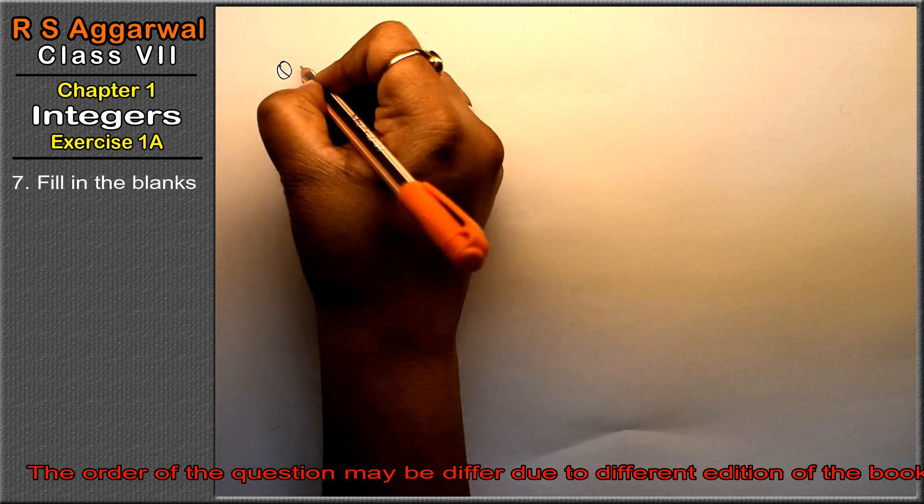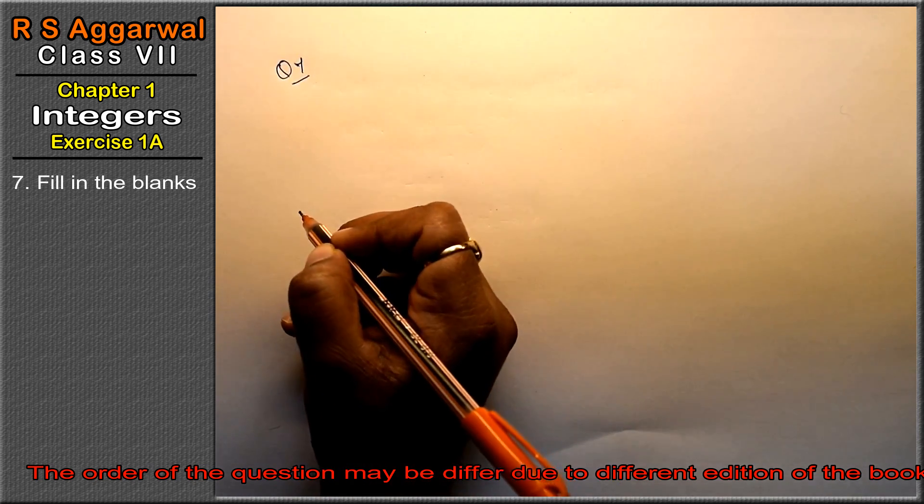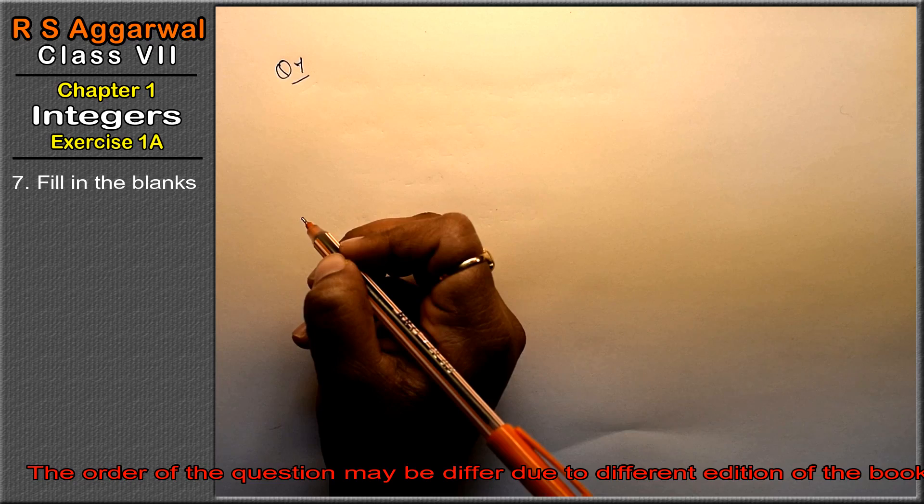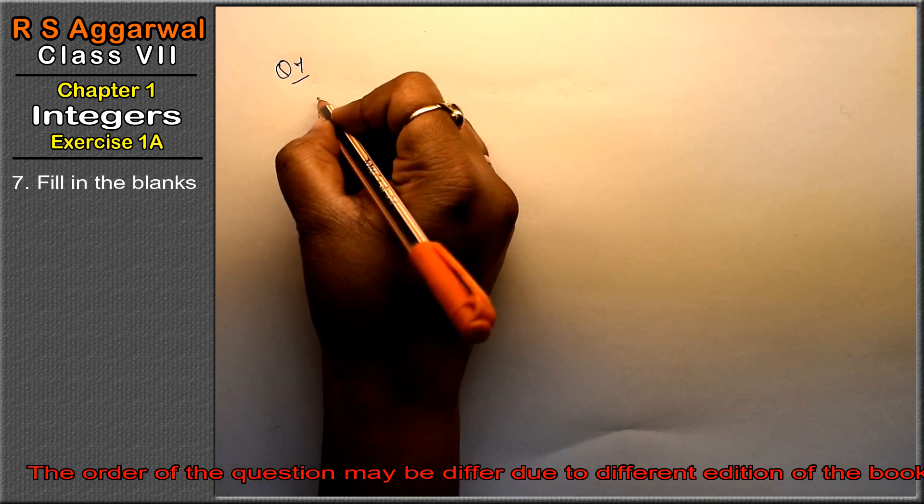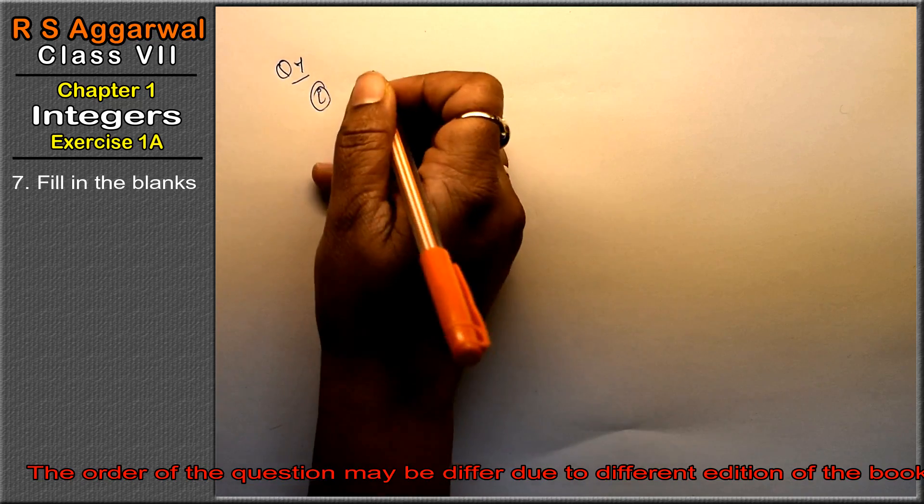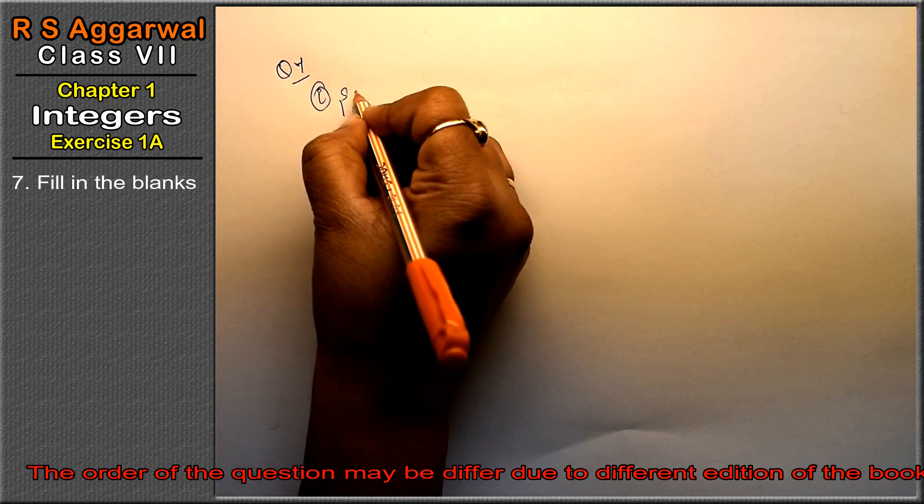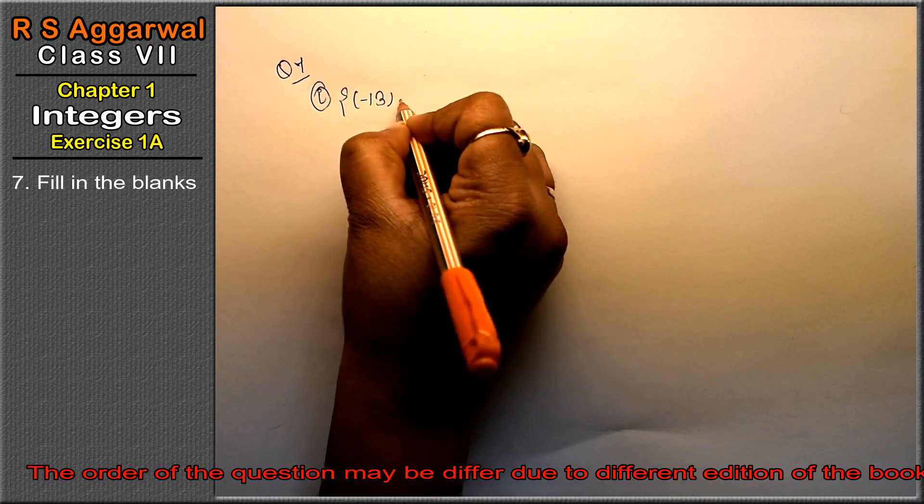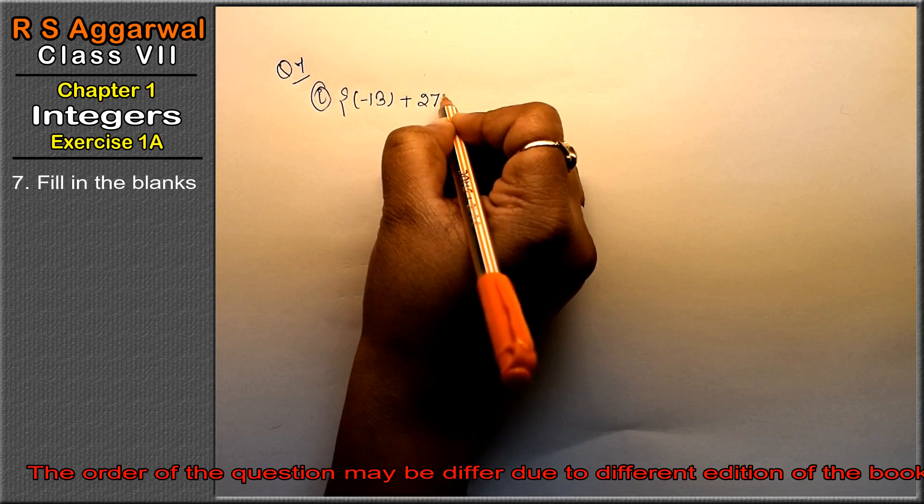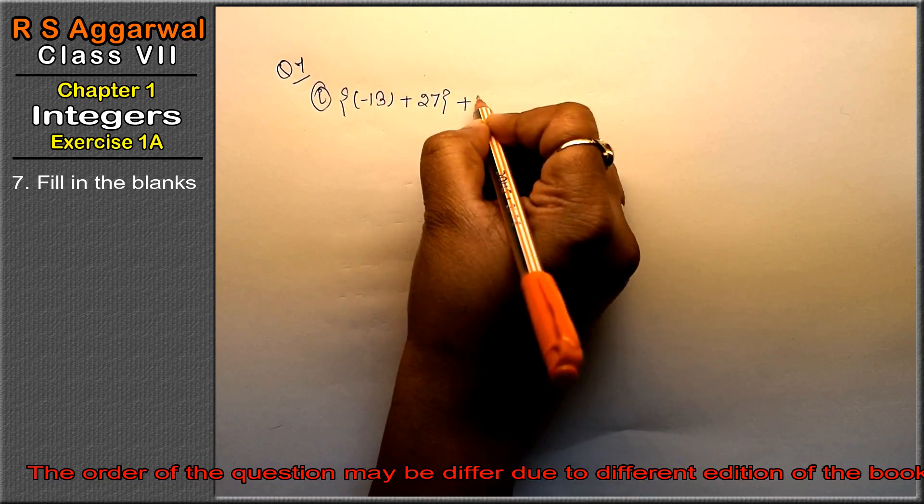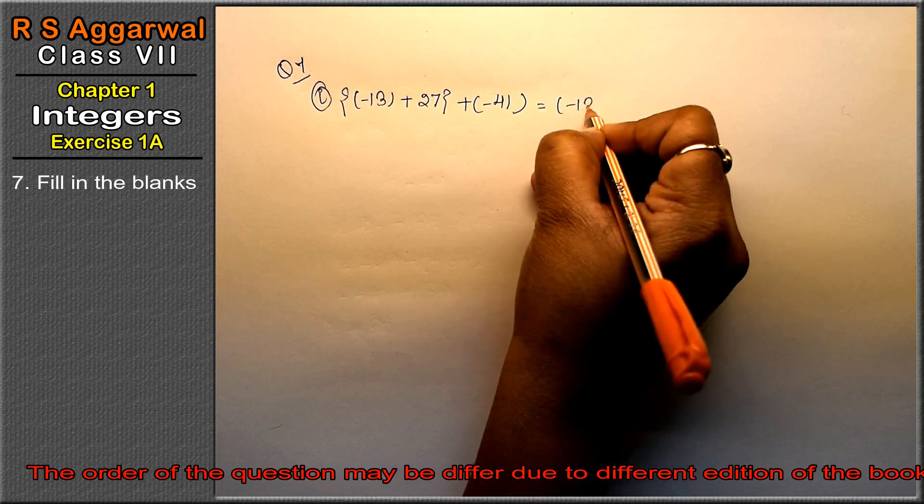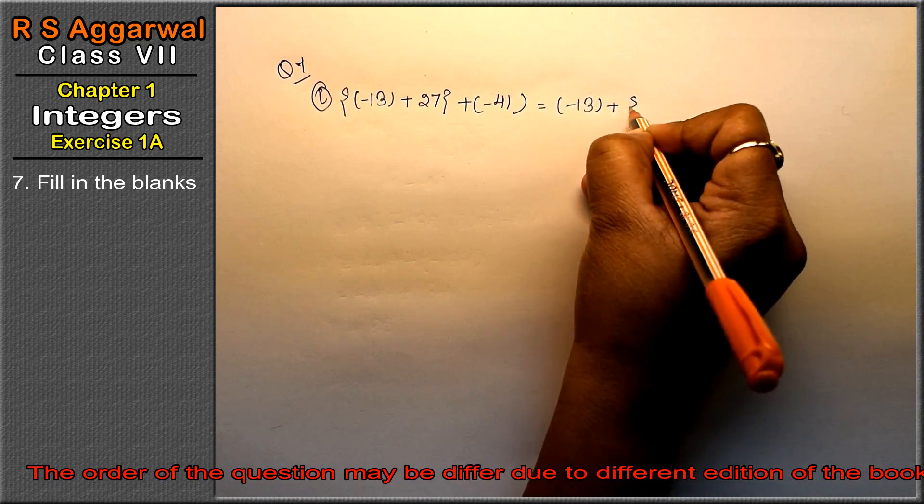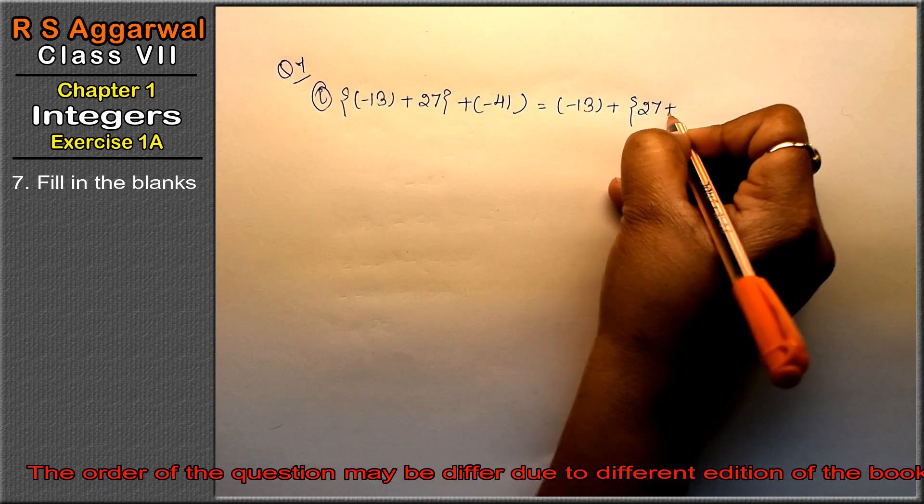Let's do question number 7 of Exercise 1A on integers. Question number 7, first part: fill in the blanks. Part (a): bracket minus 13 plus 27 bracket plus minus 41 equals minus 13 plus bracket 27 plus dash.